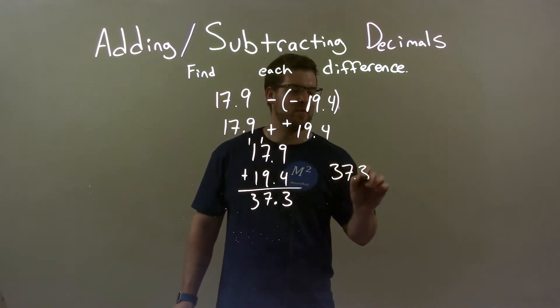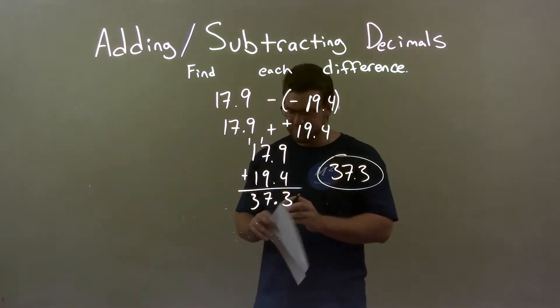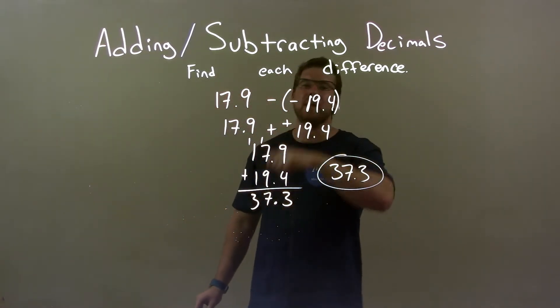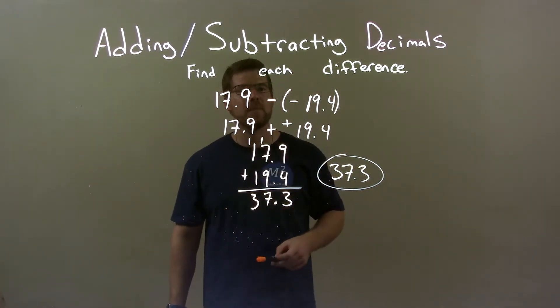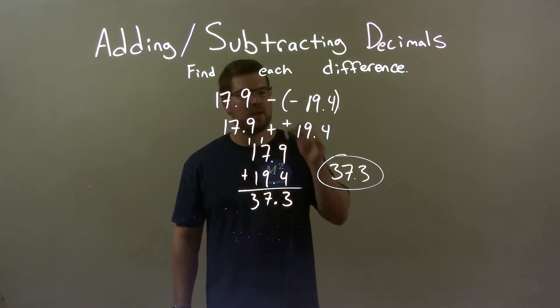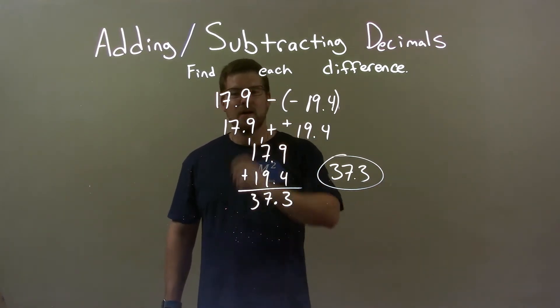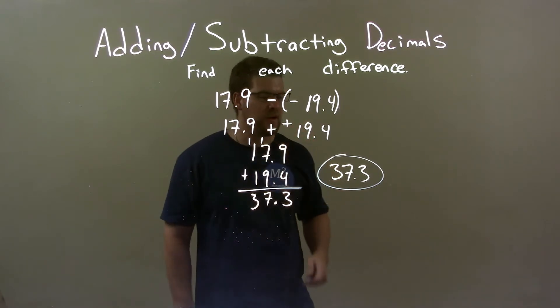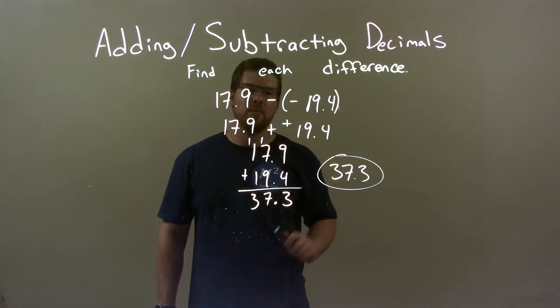My final answer is 37.3. So, quick recap. We're given 17.9 and subtracting a negative 19.4 from that. Subtracting a negative is the same thing as adding a positive. So, now we have 17.9 plus 19.4. Just added those two numbers together, and I got 37.3.